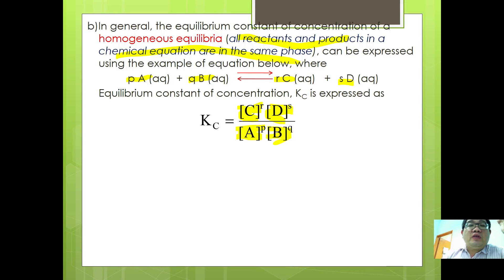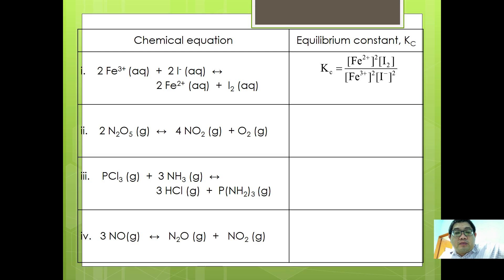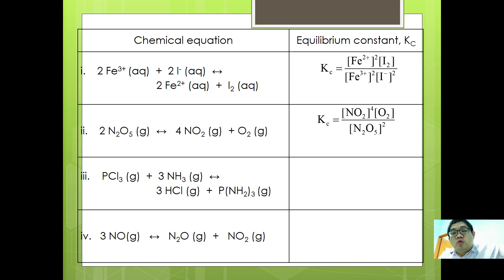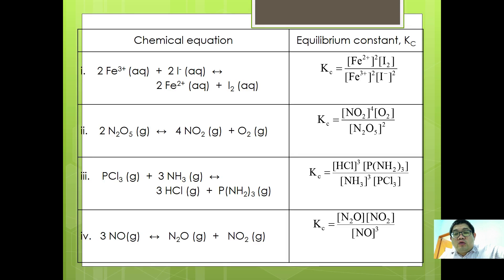A few examples showing how to derive Kc are shown below. For 2Fe³⁺ + 2I⁻ ⇌ 2Fe²⁺ + I₂, Kc = [Fe²⁺]²[I₂] / [Fe³⁺]²[I⁻]². For N2O5 ⇌ 4NO2 + O2, Kc = [NO2]⁴[O2] / [N2O5]. For PCl5 + NH3 ⇌ HCl + P(NH3)2-type reaction, Kc = [HCl]³[P(NH₃)₂] / [NH₃]³[PCl₃]. And for 3NO ⇌ N2O + NO2, Kc = [N2O][NO2] / [NO]³.